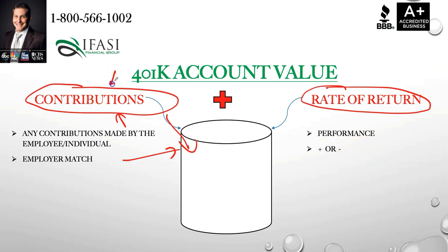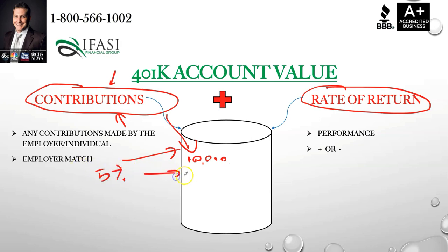The contribution side is the controllables. If you make $100,000 in a given year and put 10% of your salary into your 401k, then $10,000 is being placed into this bucket. If there's an employer match of 5%, they're placing $5,000 into the bucket. So you have $15,000 placed into the bucket for that year.